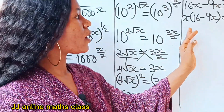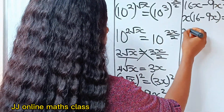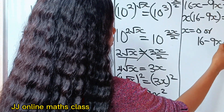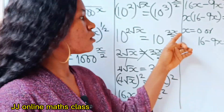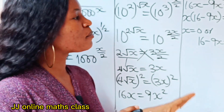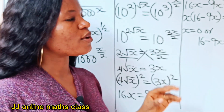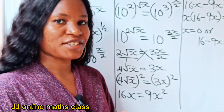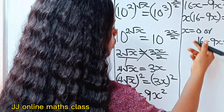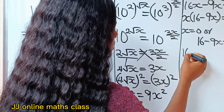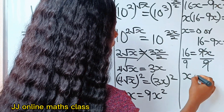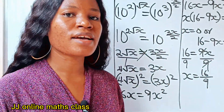This means x equals 0, or 16 minus 9x equals 0. Solving the second equation: taking 9x to the other side gives 16 equals 9x, and dividing both sides by 9 gives x equals 16 over 9. Now let's prove our solutions.